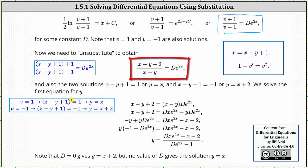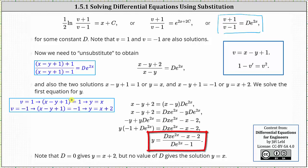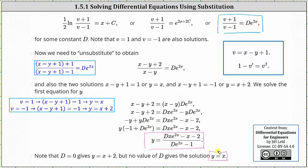Going back to the equation where we have the quantity x minus y plus two divided by the quantity x minus y equals d times e to the power of two x, we solve for y. First multiply both sides by x minus y, then distribute d times e to the power of two x, collect all y terms on the left and non-y terms on the right, factor y from the left side, and divide both sides by the quantity negative one plus d times e to the power of two x. This gives y equals the quantity d times e to the two x minus x minus two, all divided by the quantity d times e to the two x minus one. When d equals zero we get the solution y equals x plus two, but no value of d gives y equals x. Therefore the final solution is this equation where d is any constant, as well as y equals x.